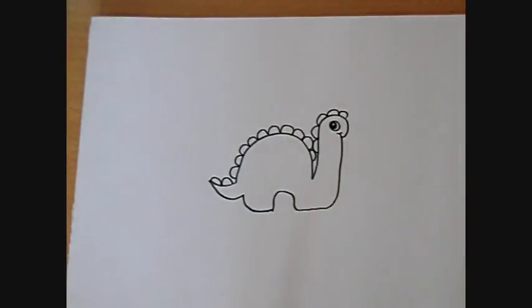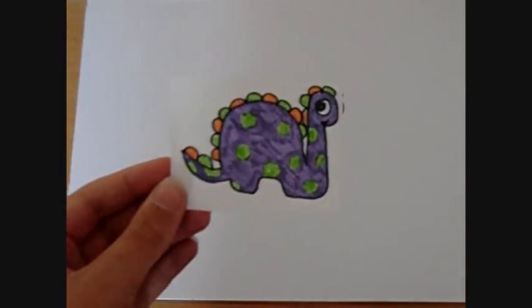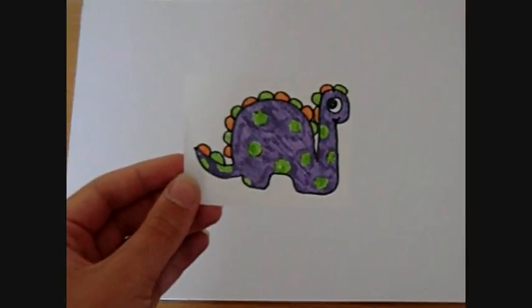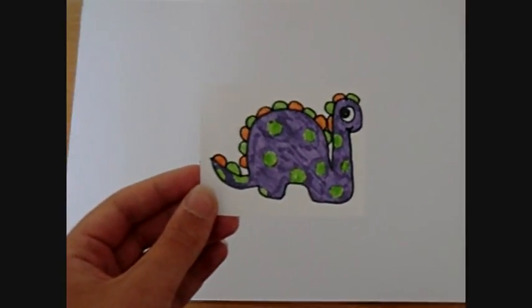What you can also do is you can add in some little spots and things. And you can color him in so that he looks like this little one here. This is how you draw a cartoon dinosaur.